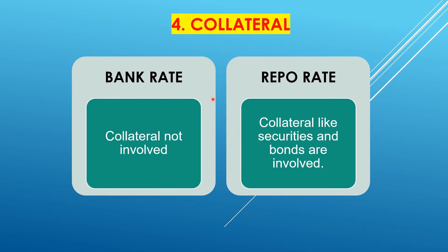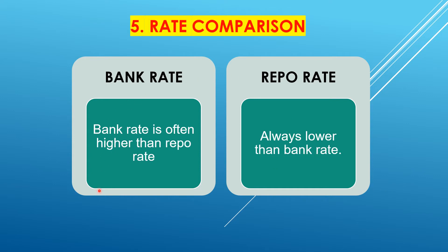Fourth point is collateral. As I said earlier, collateral is not involved in bank rate, whereas collateral like securities and bonds are involved in the repo rate system. Next is the rate comparison: bank rate is often higher than the repo rate, and repo rate is always lower than the bank rate.